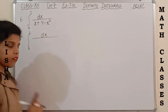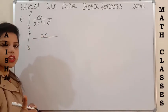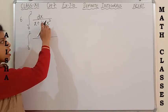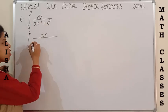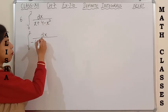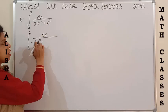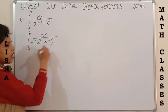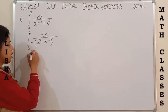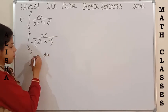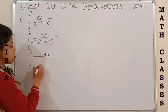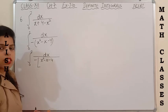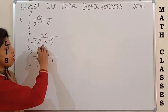Using the complete square method, the first step is to make the coefficient of x² equal to one. Since there is a negative sign, we first take negative common, so it becomes x² positive x, and the negative sign on four also gets reversed. In the next step it becomes x² minus x minus 4.